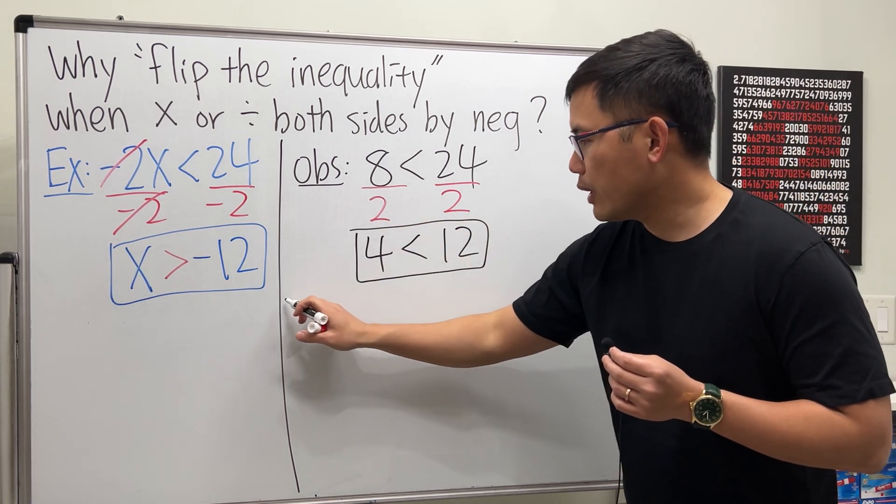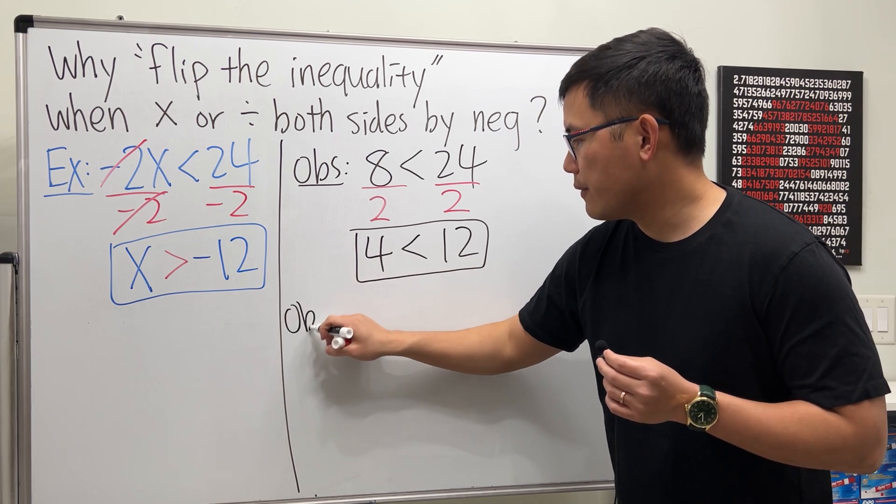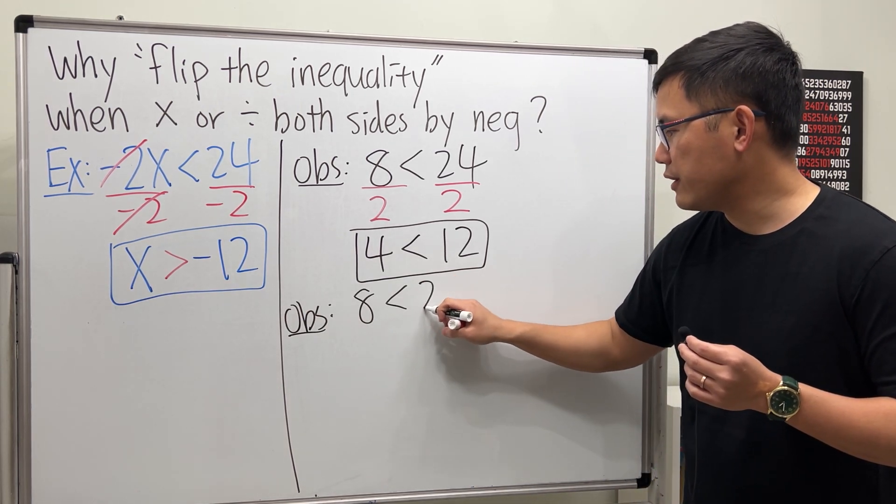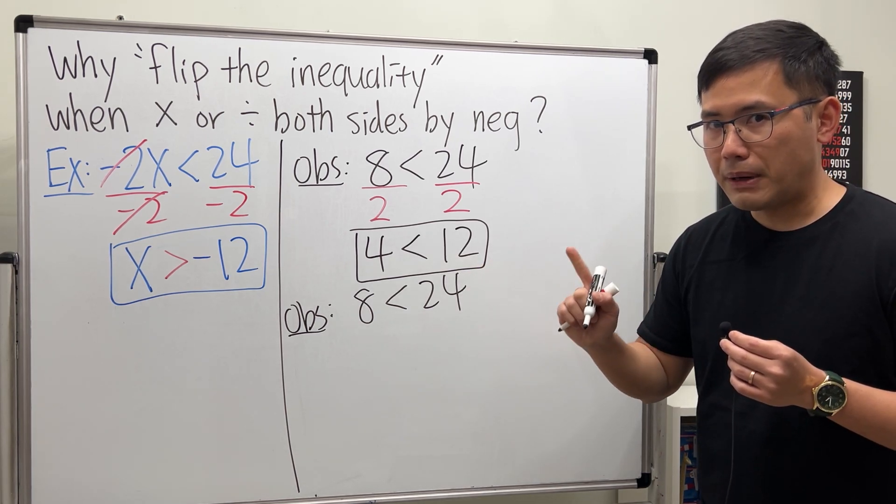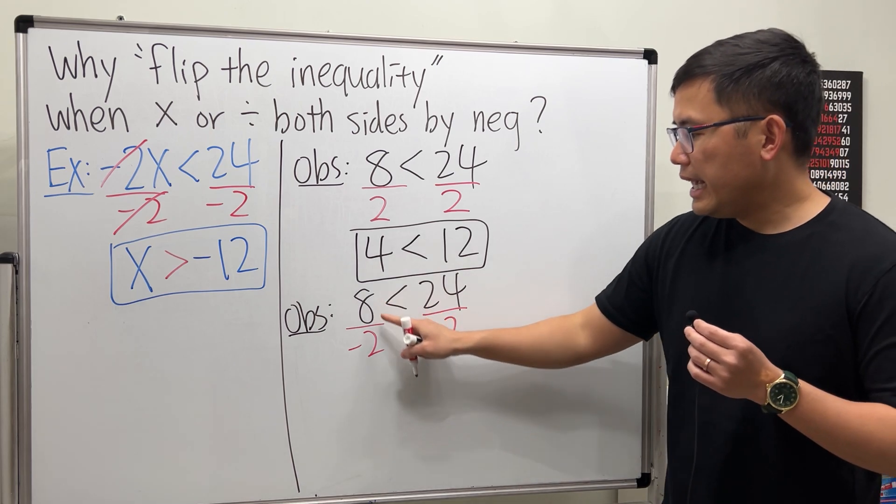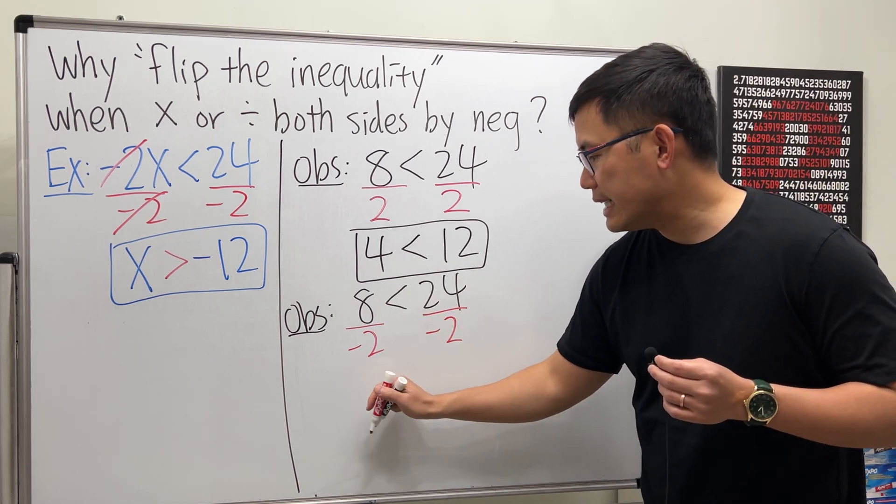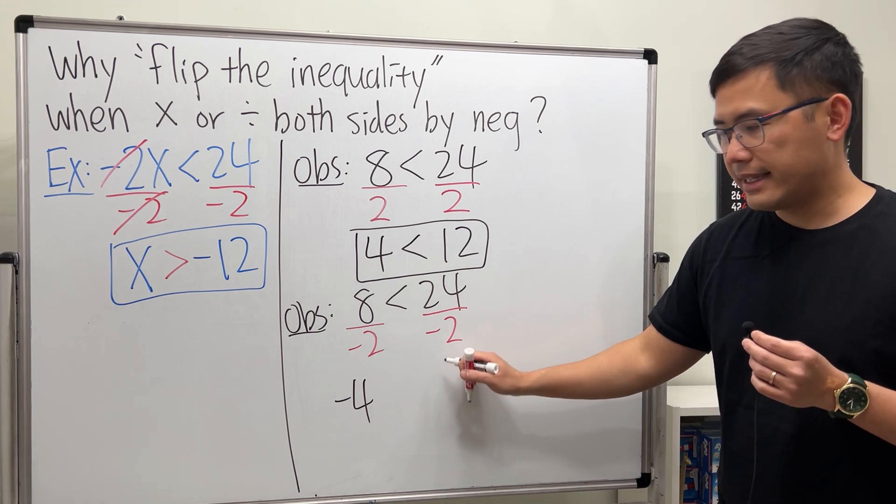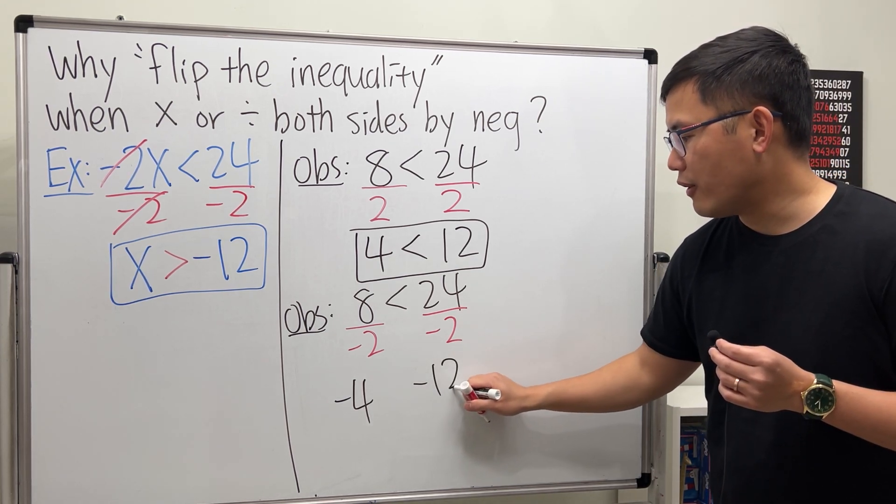However, if we are looking at this right here, still 8 is less than 24. But if we divide both sides by negative 2, 8 divided by negative 2 we get negative 4. 24 divided by negative 2, we get negative 12.